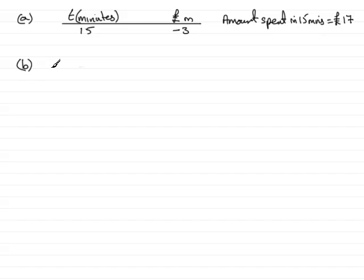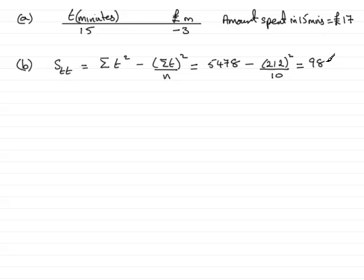Now, for part B, we're asked to find out the values of STT and STM and SMM. We'll start with STT, and you should know that this is the sum of the T squareds minus sigma T all squared over N. And if you look at the summary statistics they give, they give you the value of the sum of the T squareds. It's 5478. And then you're going to have to work out the sum of the T values. So just add up the column, the first column in your table, and you'll find that comes to 212. So you've got sigma T is 212. We have to square it, and it's divided by N, the number of customers, which was, in this example, 10. Do that on a calculator, and what you get is 983.6.